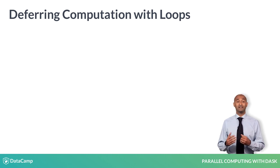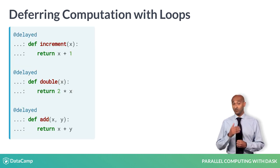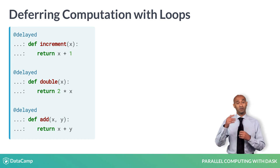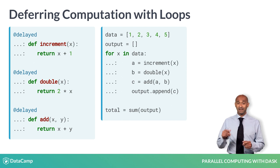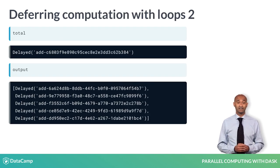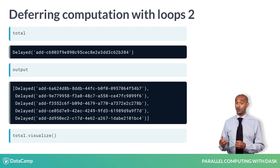As another example, let's use the delayed decorator with some new functions, increment, double and add. This calculation here involves repeated function evaluations within a loop. The dependencies are a little trickier. C depends on A and B within each iteration and its computed value is appended to the list output. The final result total is a delayed object and output is a list of intermediate delayed objects.